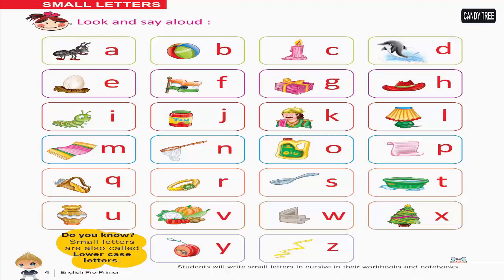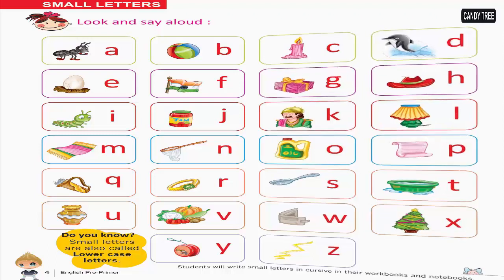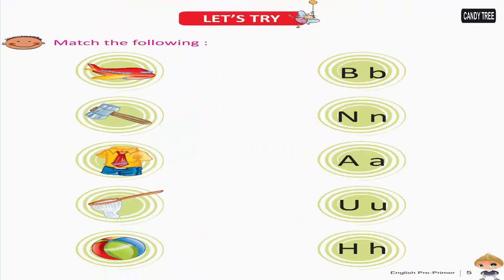Small Letters. Look and Say Aloud: A, B, C, D, E, F, G, H, I, J, K, L, M, N, O, P, Q, R, S, T, U, V, W, X, Y, Z. Do you know Small Letters are also called Lowercase Letters? Let's Try — Match the following.